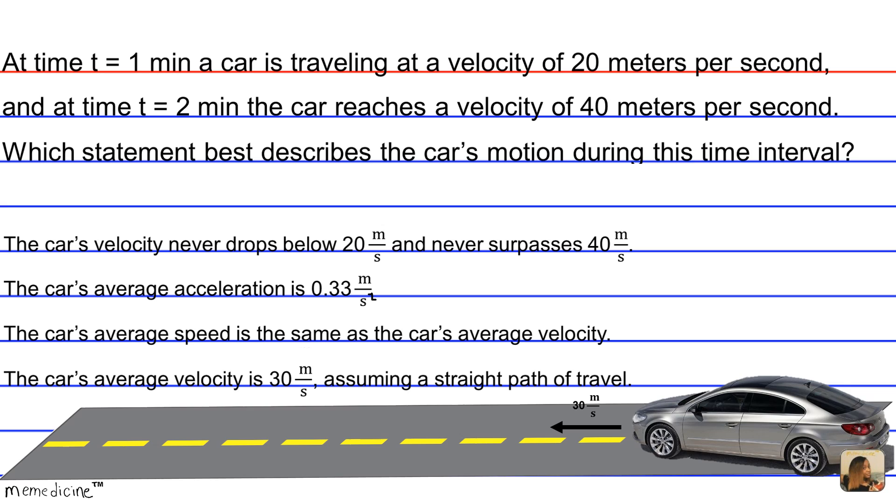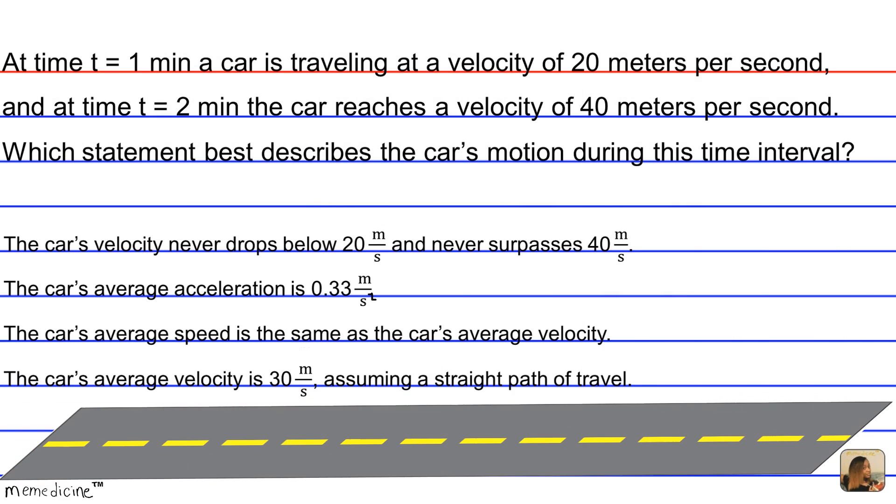Okay, hopefully by now you've come up with a solution, but if not, don't worry, we're going to look at the solution right now. Average velocity is the change in displacement over time. If the car is traveling at a constant acceleration, we can assume the velocity would be 30 meters per second, but we're not told that, so we can't necessarily make that assumption.